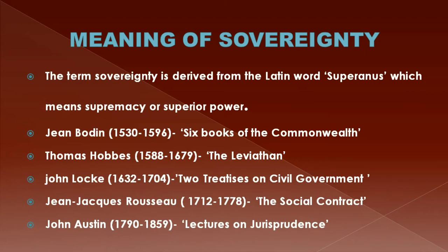At that time there was prevailing chaos in France, which demanded a supreme authority whom everybody would obey. The civil war in France had practically ruined the country. That is why Bodin defined sovereignty as a supreme power over citizens and subjects, unrestrained by law.